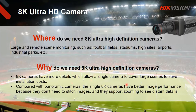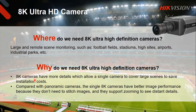So 8K Ultra HD — what is 8K? It is phenomenal resolution. Where do you need this? Obviously large areas. If you put a higher resolution camera, you can cover more with less cameras or in more detail, depending on your application. Typical use cases: football stadiums, high sites, airports. You need high definition, high detail. Use a single camera to cover a large area to save installation costs, channel costs, channel numbers on your NVRs. Compared to panoramic cameras, single 8K cameras have better image performance because they don't need to stitch images, and they support zooming to see distant details.